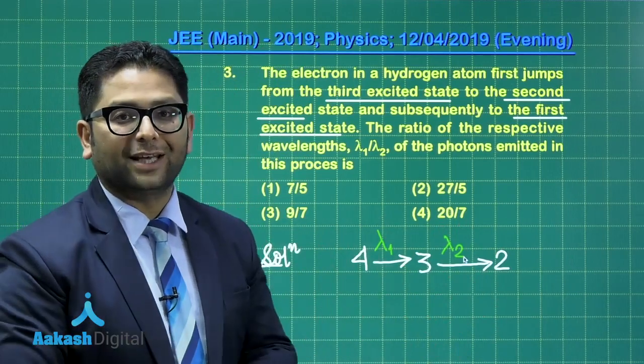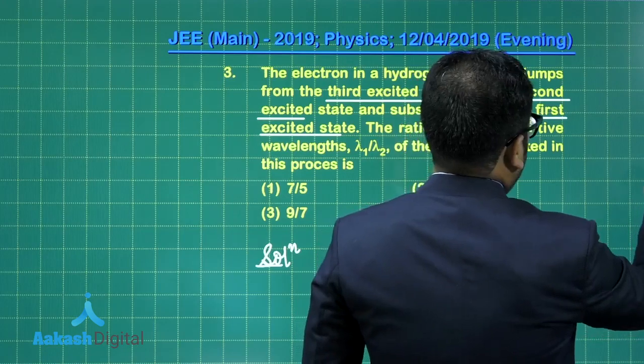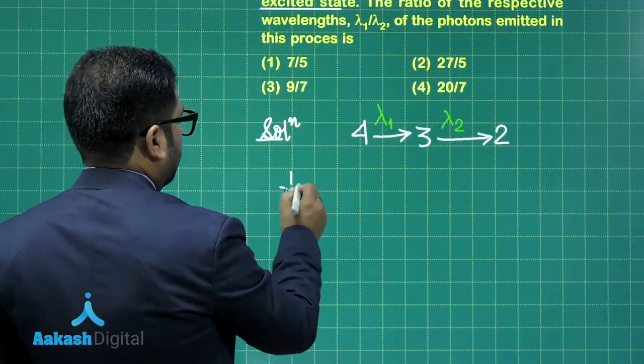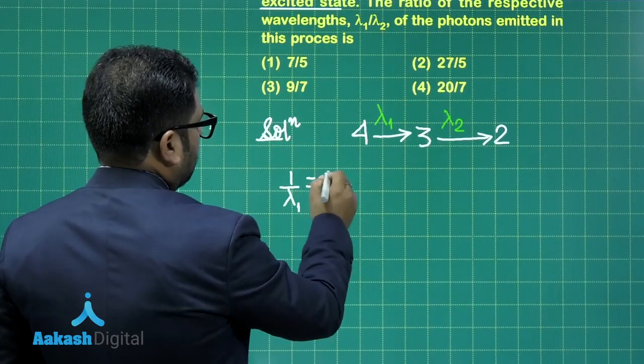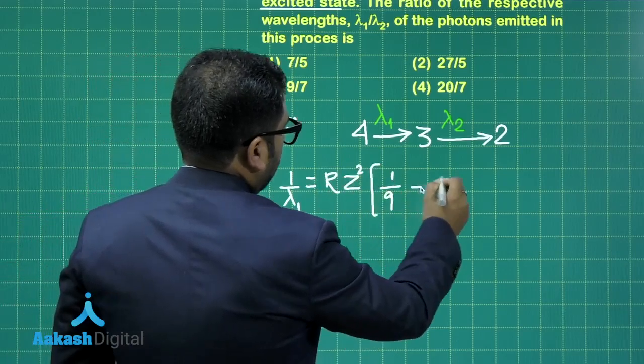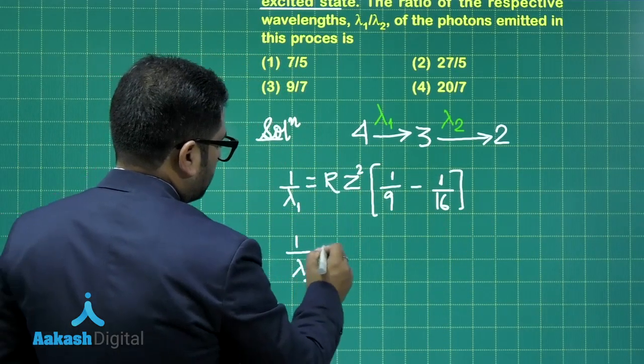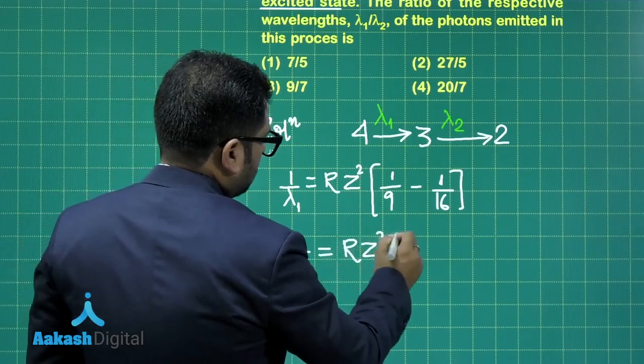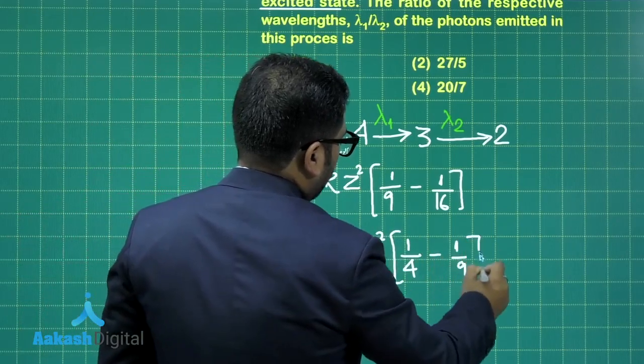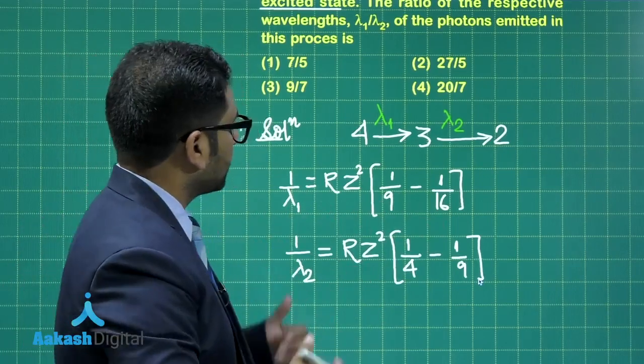Now here this is a straightforward one. In case number 1, you would see 1 by lambda 1 is R Z square, 1 by 9 minus 1 by 16. And in the second case, that will be 1 by lambda 2 equals R Z square, 1 by 4 minus 1 by 9. Straightforward formula. Here we have used n square and m square. Now these are the values of lambda 1 and lambda 2.